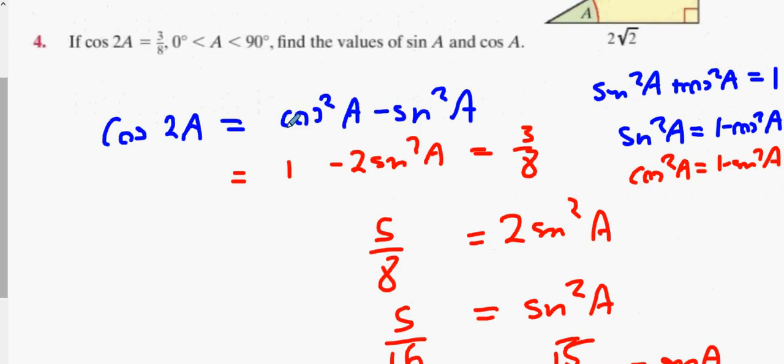You have to see the way there's two variables, sin A and cos A. You need to go from two variables down to one variable, otherwise you can't do it. So that's three and four done.